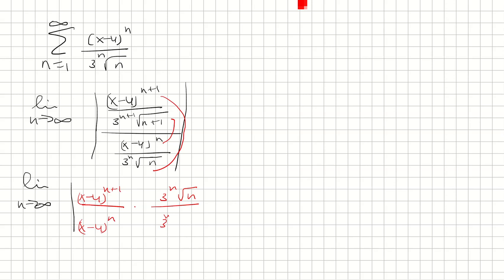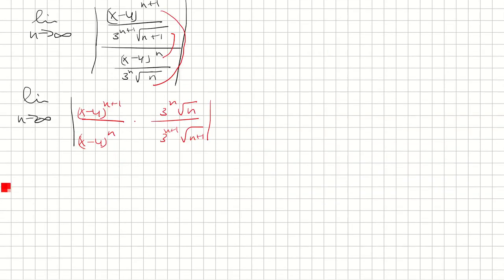This one we can simplify, so we have x minus 4 left here since you subtract the exponents, and then we have a square root of n at the top and then 3, factor 3 at the bottom with square root of n plus 1.